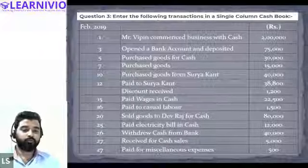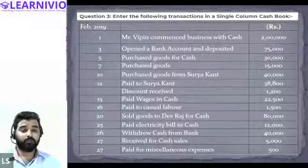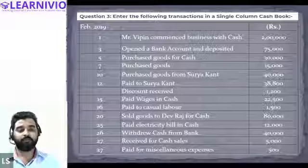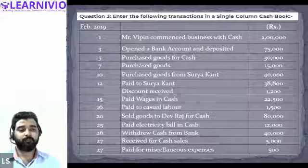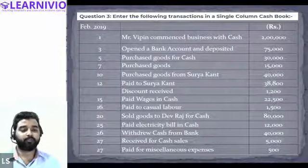Paid wages in cash — on the credit side of the cash book, by Wages Account. Transaction on the 16th: paid to casual labor — By Casual Labor Account, 1,500 on the credit side. On the 20th, sold goods to Devraj for cash — To Sales Account on the debit side. Paid electricity bill in cash — credited, By Electricity Account.